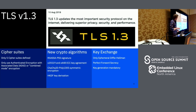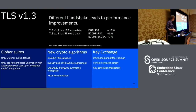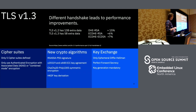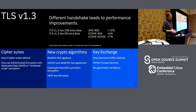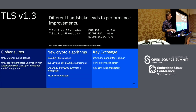TLS 1.3 promises superior privacy, security, and performance. Regarding performance, simply by reducing the size of extra data in handshakes, they managed to get some performance improvements. Measurements from WolfSSL showed that just by switching from TLS 1.2 to TLS 1.3, they got a performance improvement between 6% and 15% using different cipher suites.